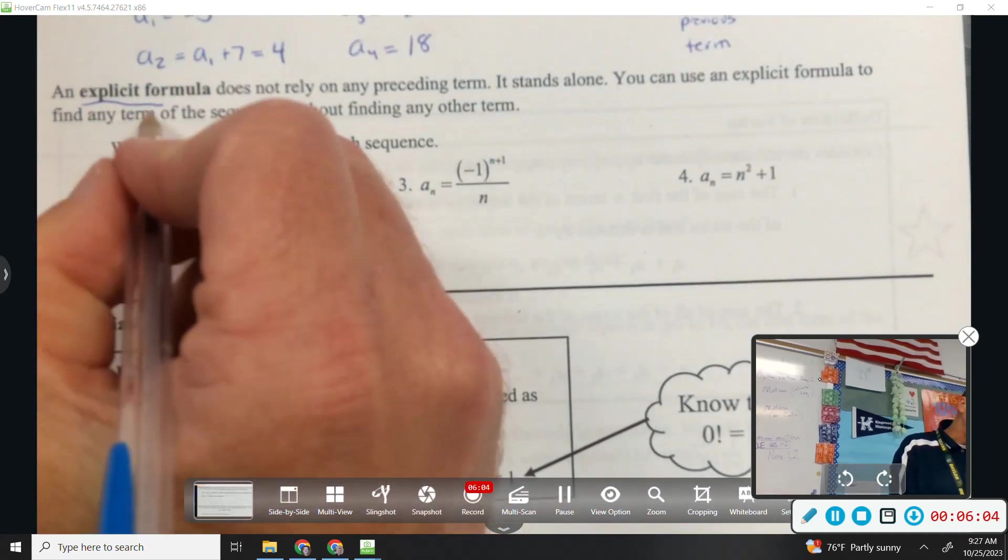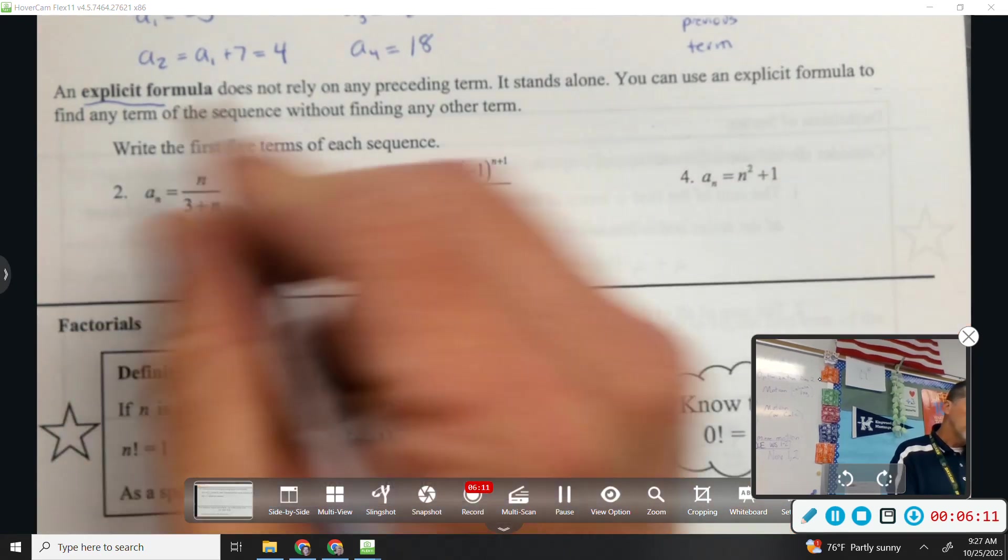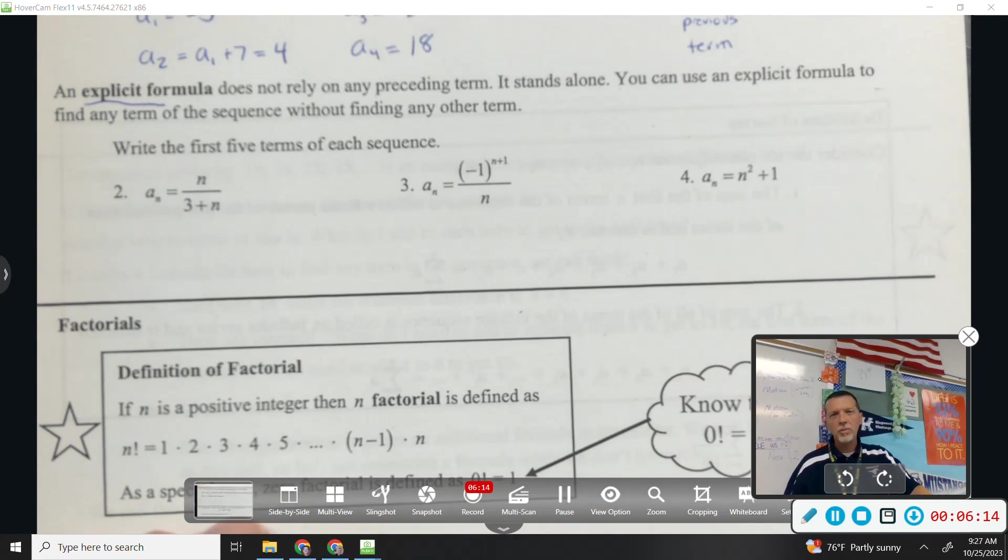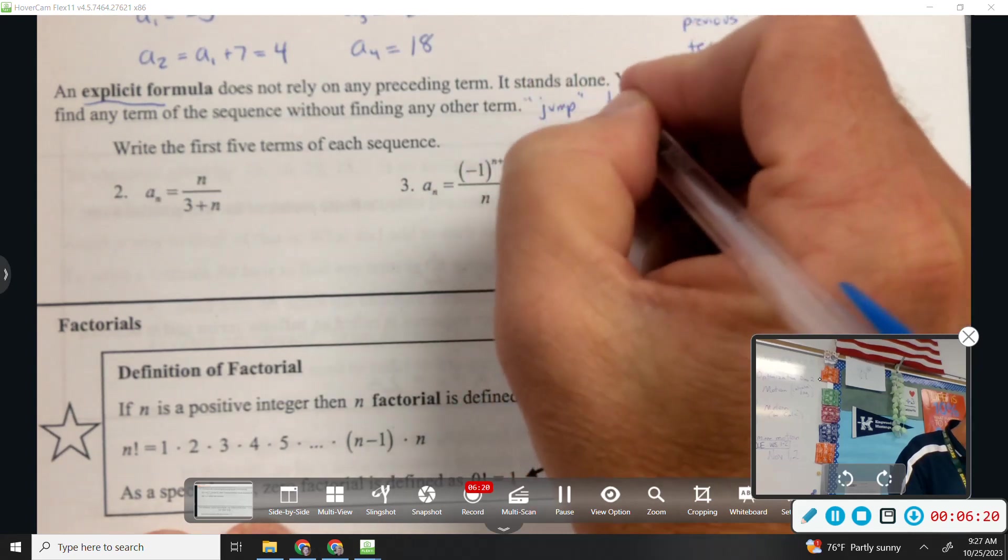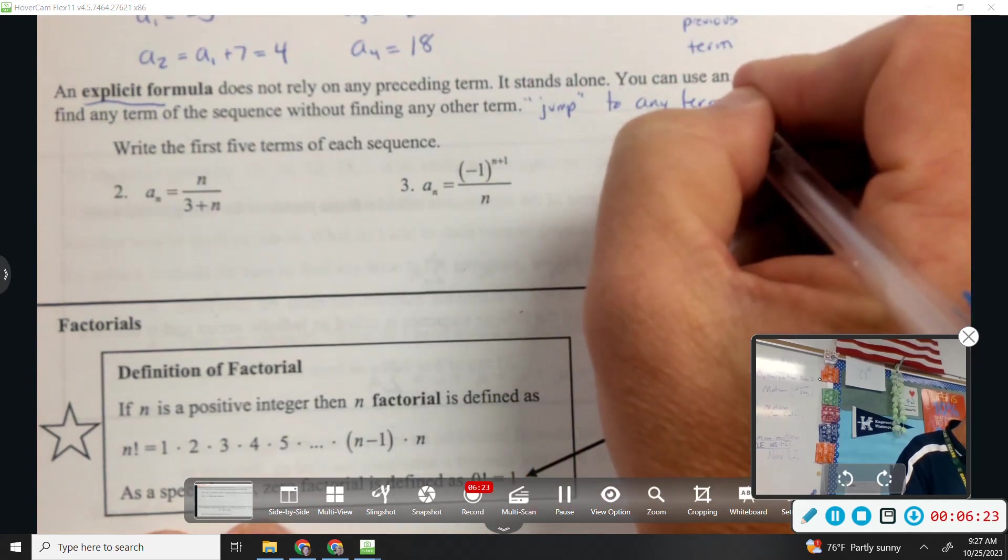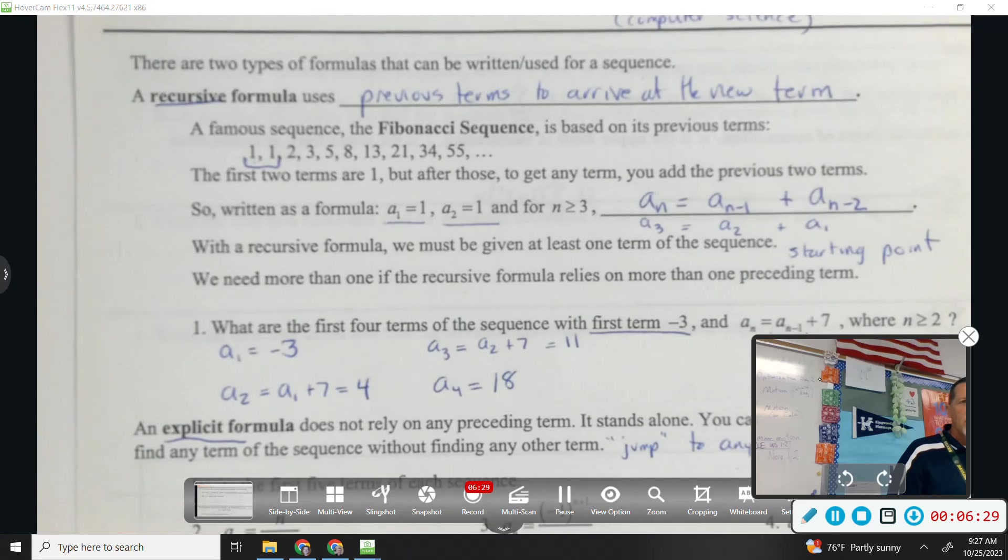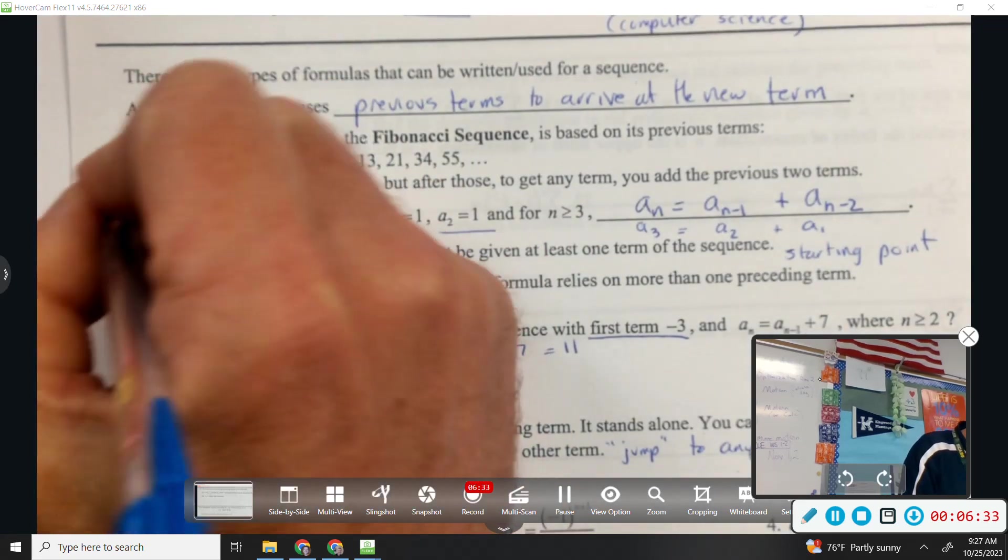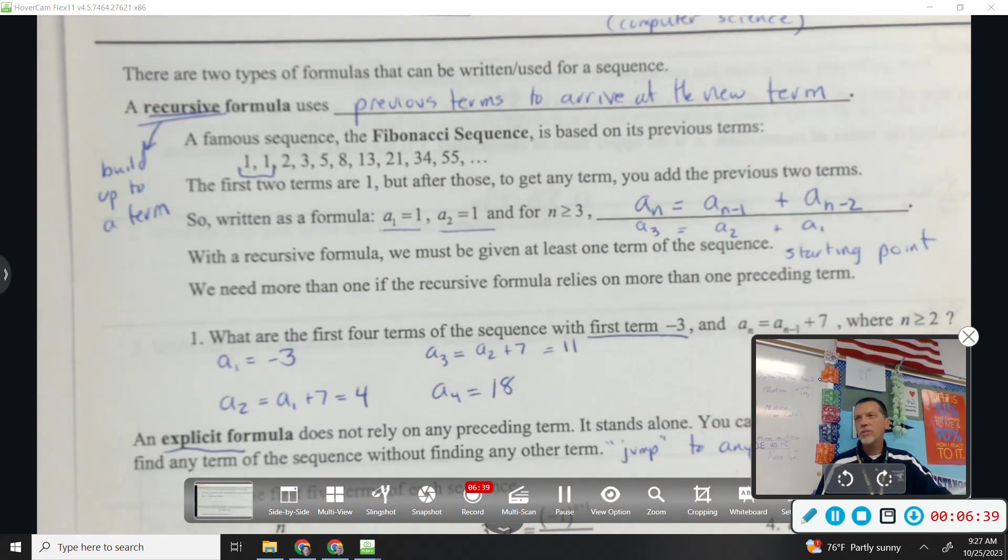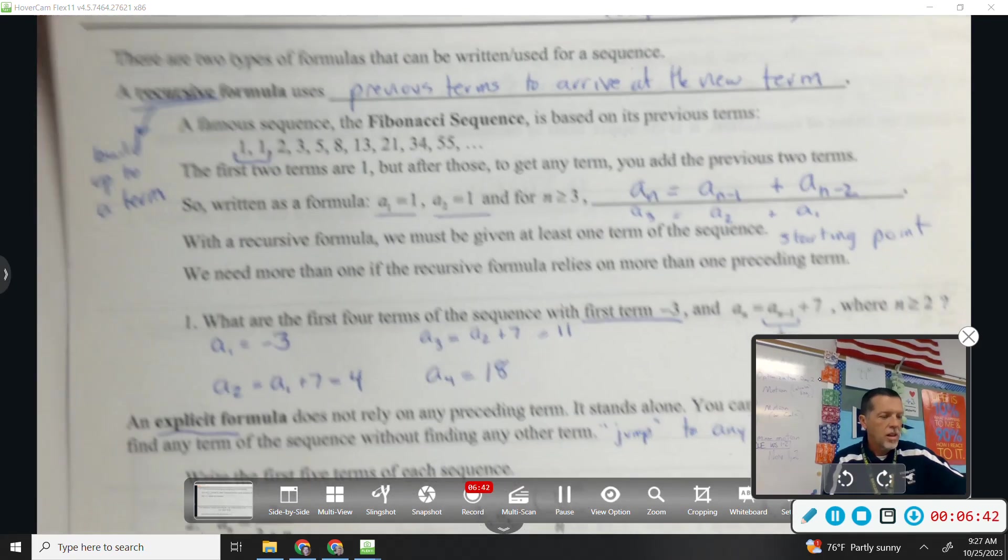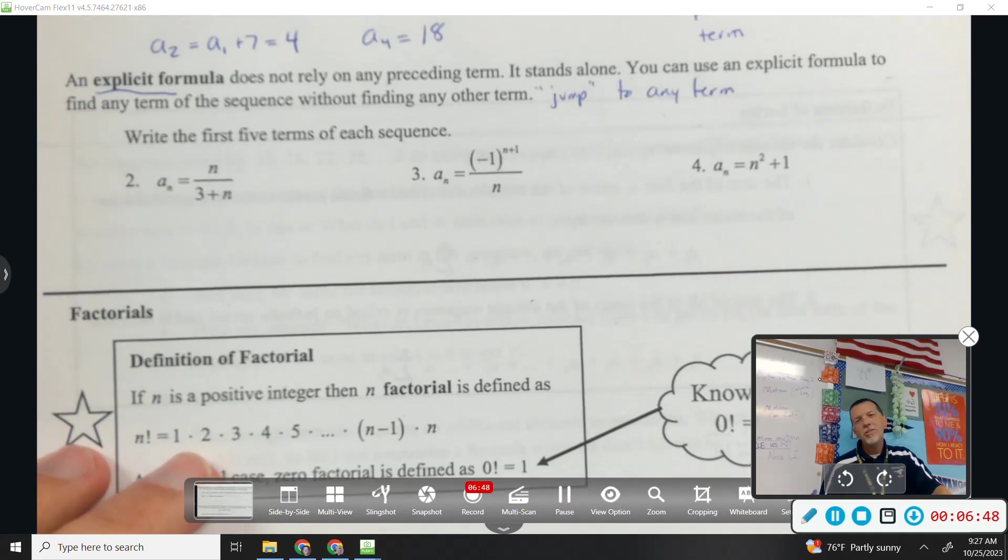An explicit formula does not rely on any preceding term. It stands alone. You can use an explicit formula to find any term without knowing previous terms. Like, you can jump to any term you like. So explicit, you can jump to any term you like. Recursive, you sort of have to build up to it. But you can't just go find the 12th term of a recursive formula. You've got to find the first 11. But an explicit formula is nicer, and we'll use explicit formulas more often, because you can just jump to any term you like.